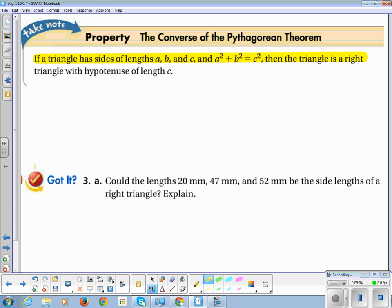If the triangle has side lengths A, B, and C and A squared plus B squared equals C squared, then the triangle is a right triangle with a hypotenuse of length C. The hardest part of this is going to be determining which one is the hypotenuse and which one is the legs.